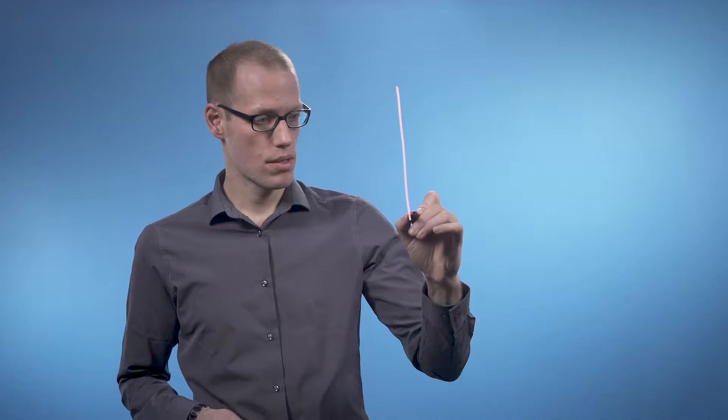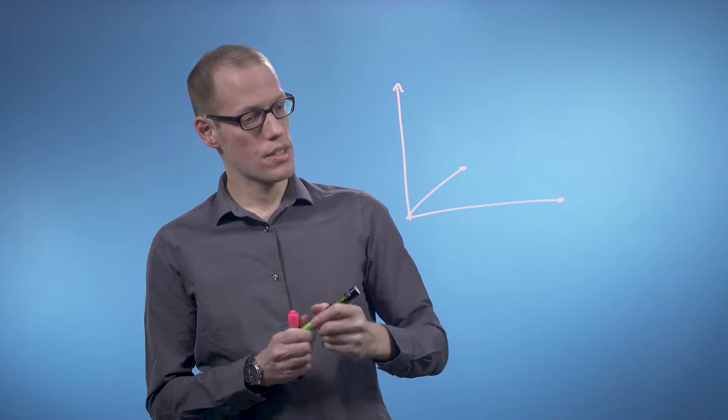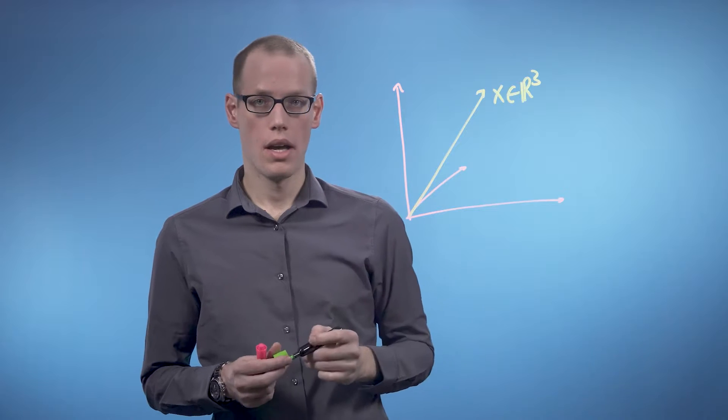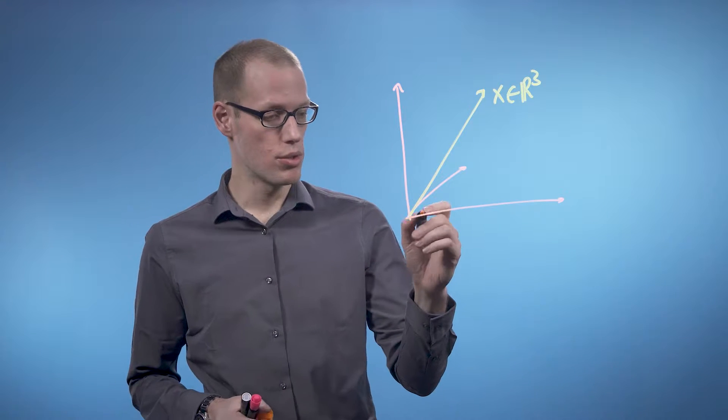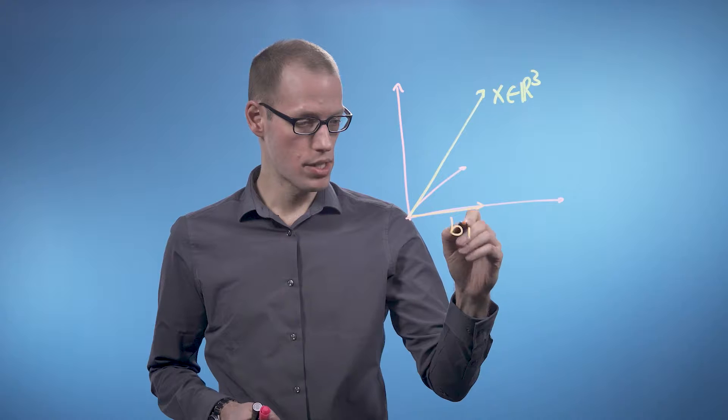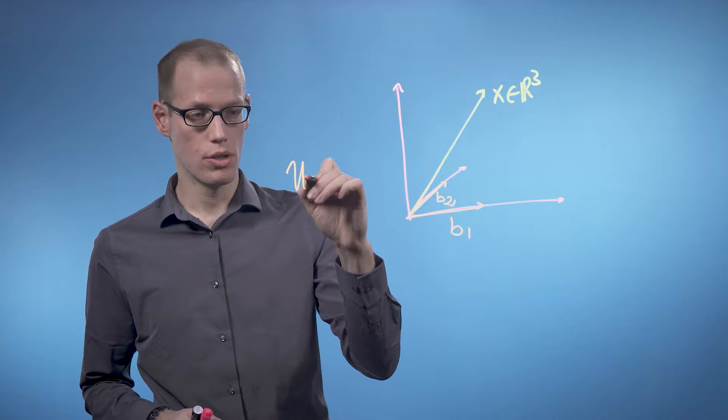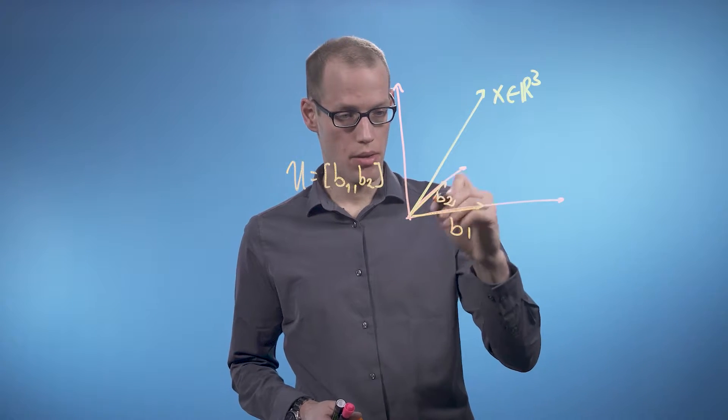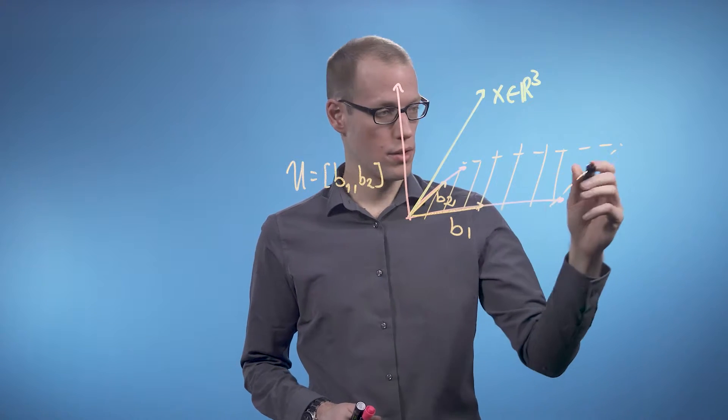Let's start with an illustration. We're going to look at a case where we have a vector x that is living in a three-dimensional space. And we define a subspace, a two-dimensional subspace u, which has basis vectors b1 and b2. For example, this vector and b2 is this vector. So we write u is spanned by b1 and b2. So u, in this case, would be the plane down here. This is u.